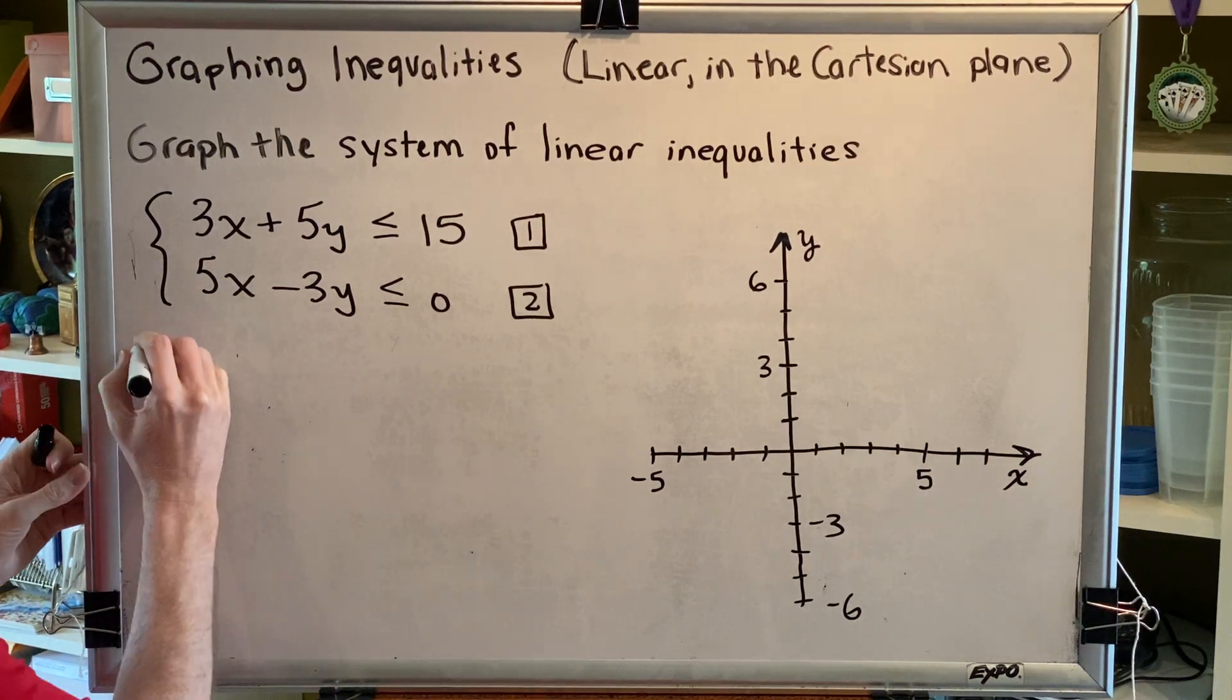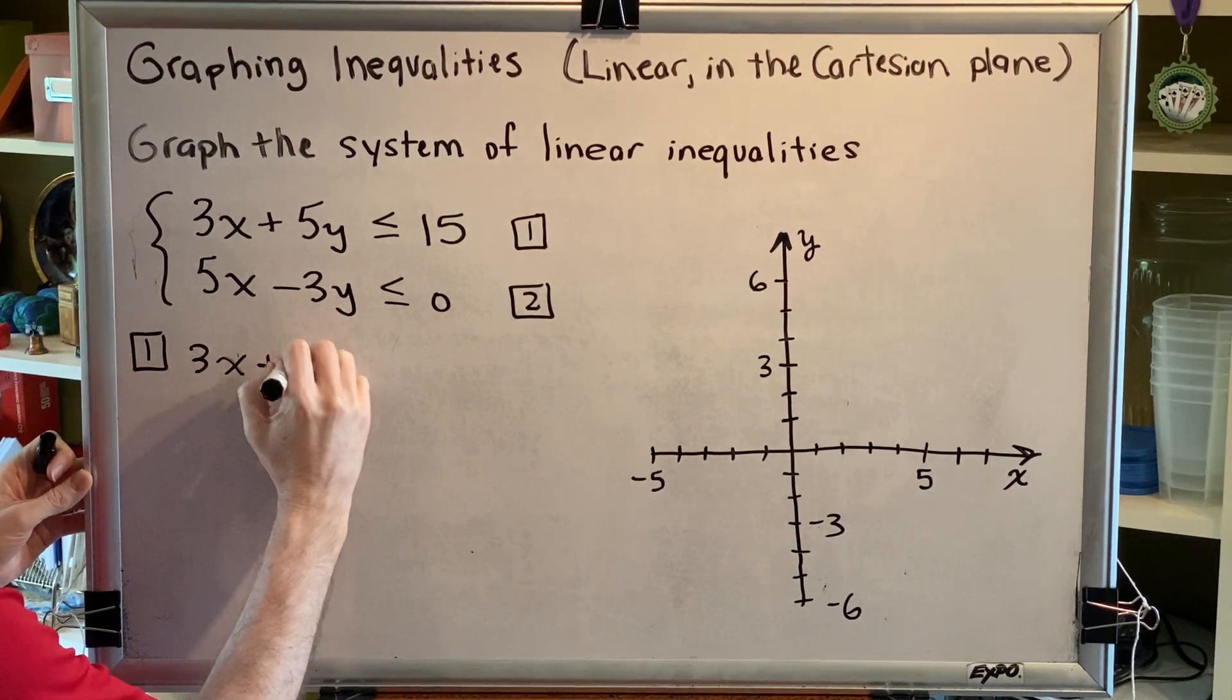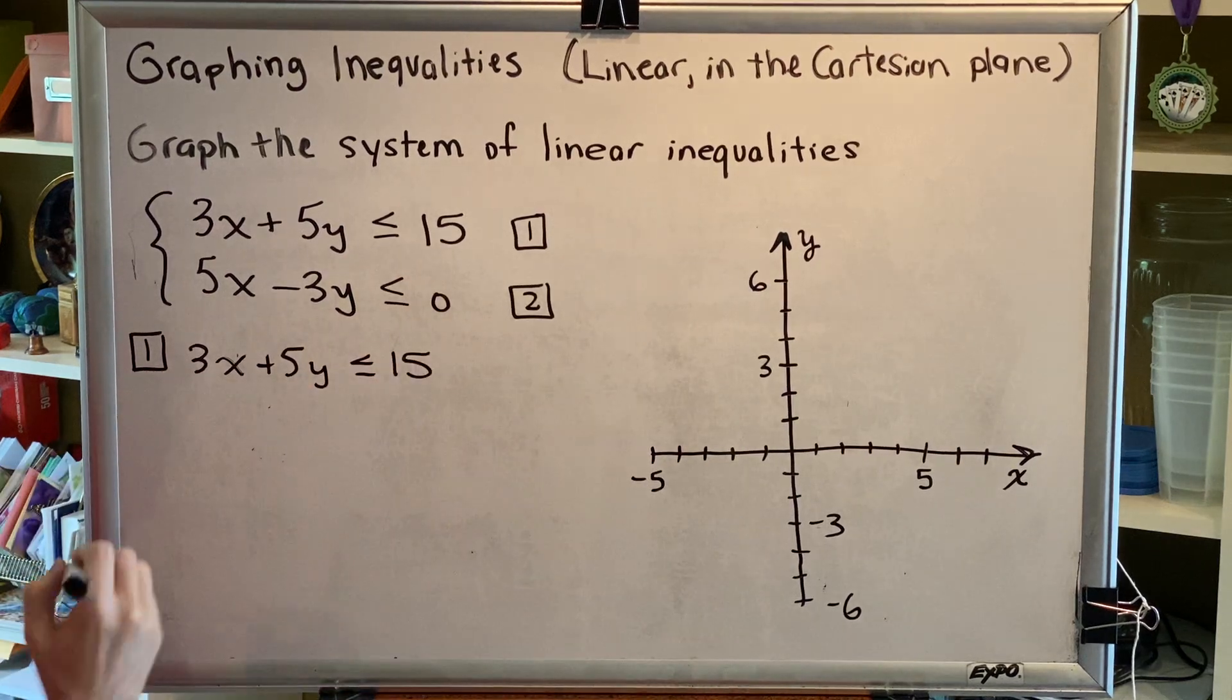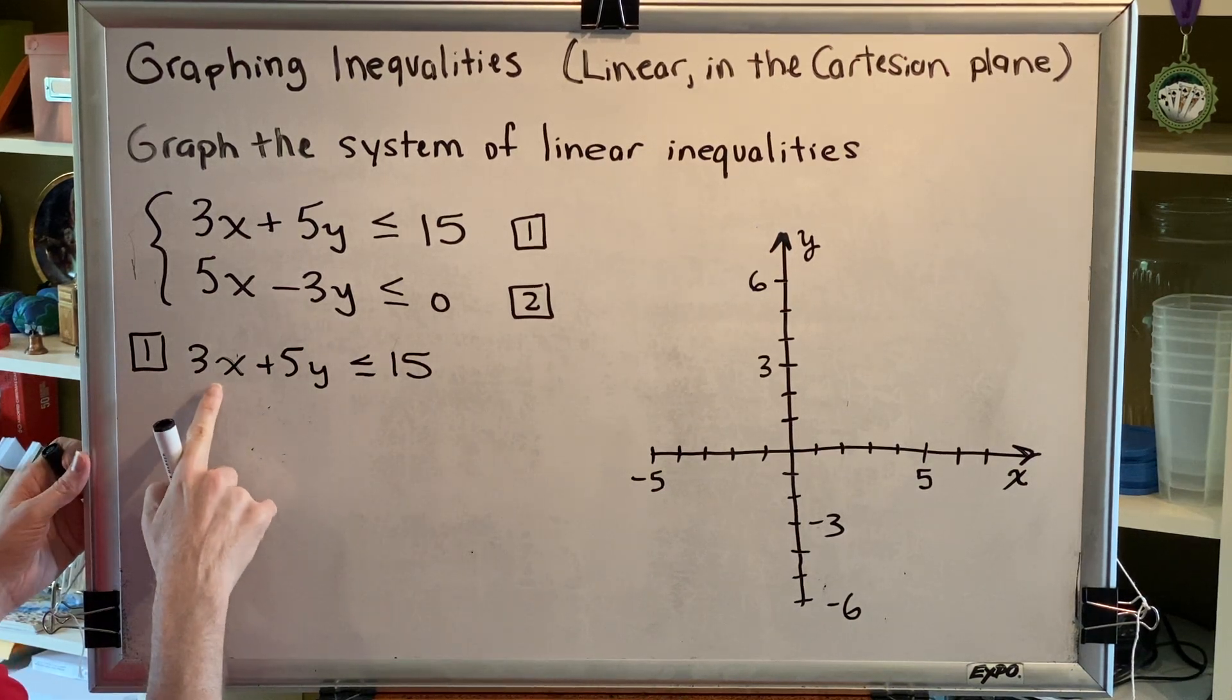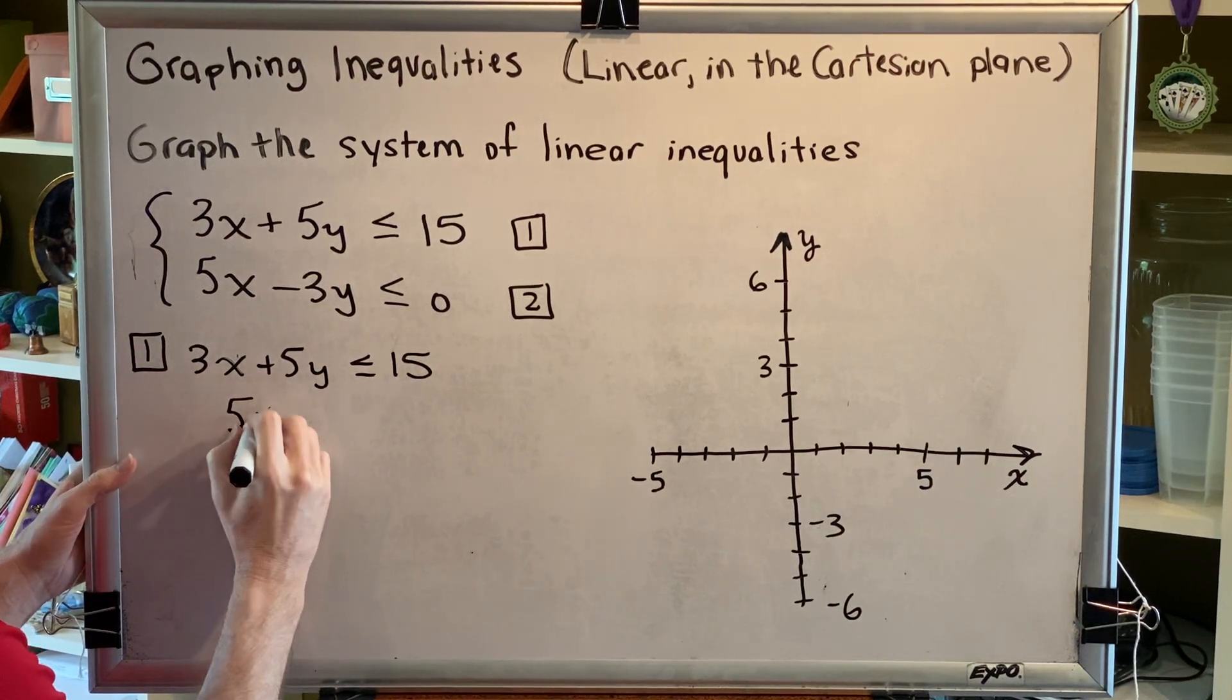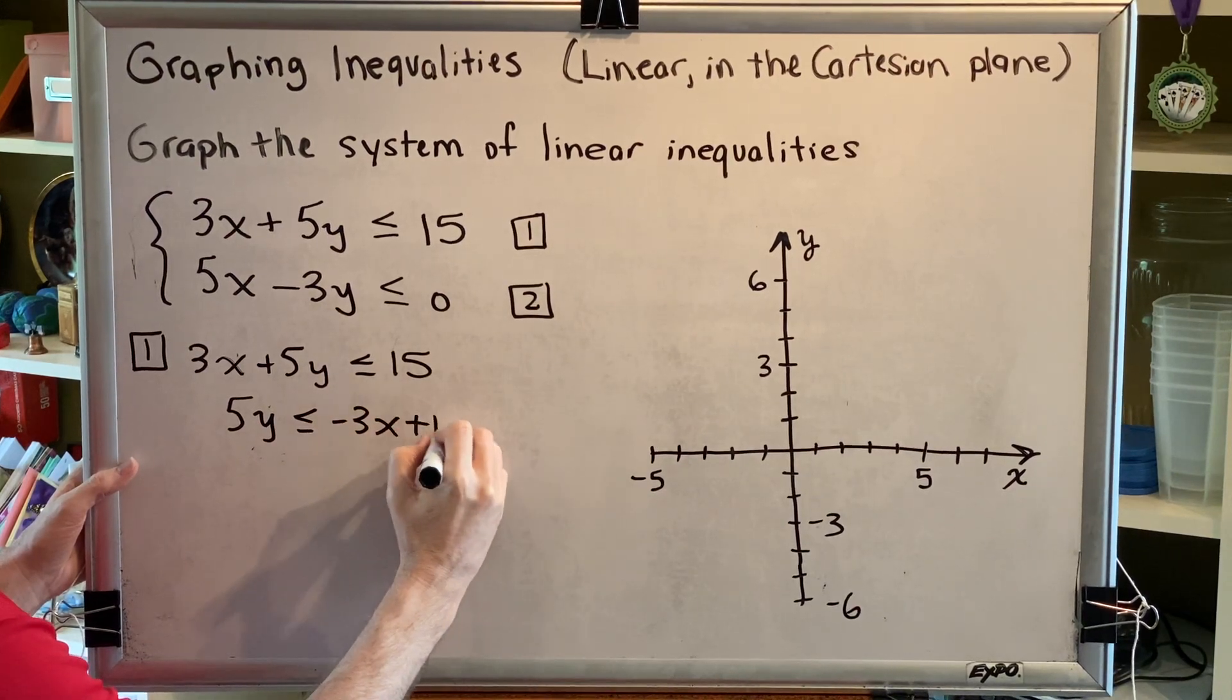Let's start with our first inequality. To graph this, we go through the same three steps as we've seen in previous videos. First is to solve for y. Let's move this positive 3x on the left to become a negative 3x on the right. We have 5y is less than or equal to negative 3x plus 15.